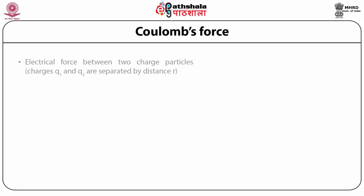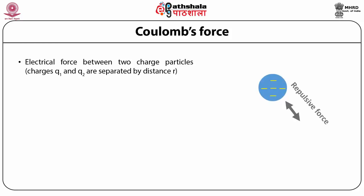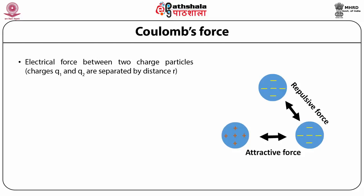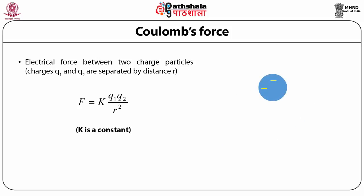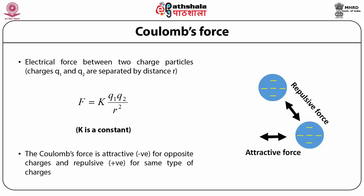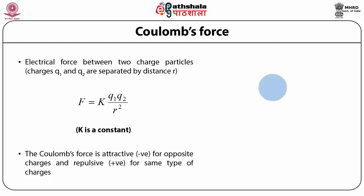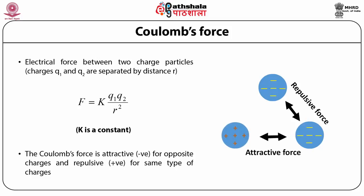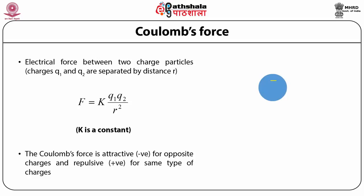The electrical force between two charged particles is called Coulomb's force. If the charges are Q1 and Q2 separated by distance R, then F = K × Q1 × Q2 / R². Coulomb's force is attractive for opposite charges and repulsive for same-type charges. For example, two negatively charged particles repel each other, while a positive and negative charge attract.